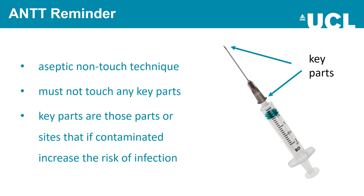When you do venipuncture, you must use your aseptic non-touch technique and must not touch any of the key parts — for example, on the needle and syringe, the needle itself, the syringe, and the syringe hub. Key parts are those parts or sites that, if contaminated, will increase the risk of infection.